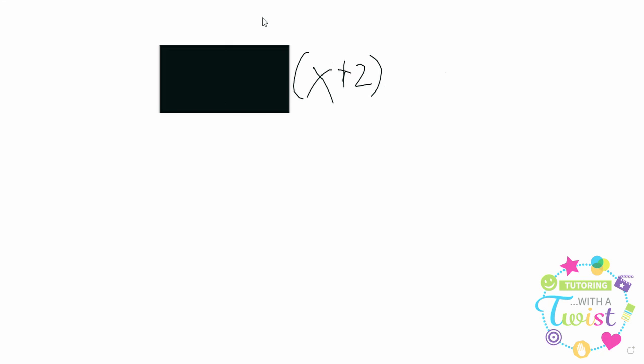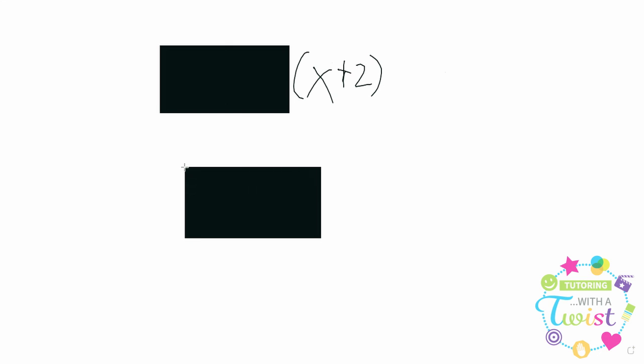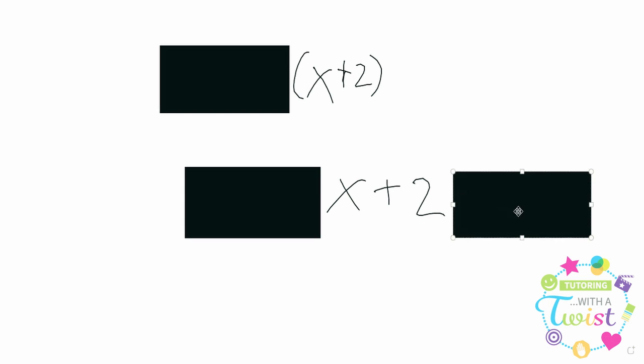So what are we going to get? Well, we'll get big mystery box times x plus 2 times that big mystery box. Just as before we are distributing across. And now that we've done this, we can go back and say, wait a minute, what was actually inside that mystery box?